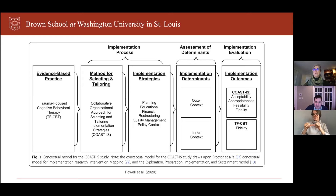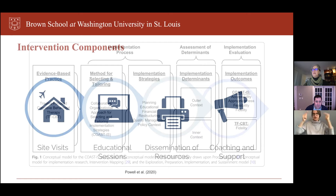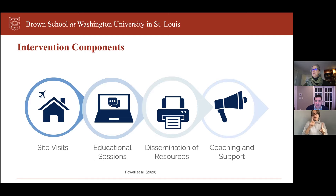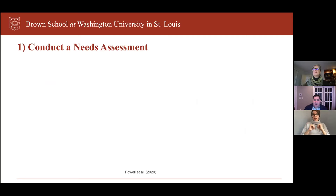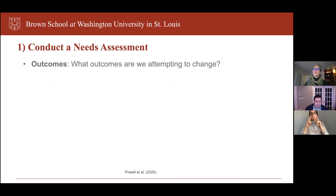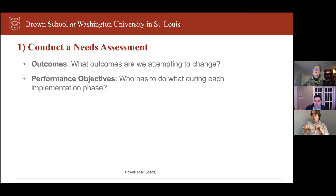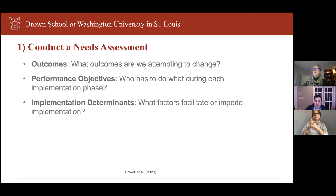EPIS is a hybrid determinant and process model that focuses on multiple phases of implementation. In terms of COASTIS intervention components, it involves site visits, five educational sessions, dissemination of educational resources, and then monthly coaching and support for organizations — essentially implementation facilitation or coaching. We operationalized implementation mapping by first conducting a needs assessment, thinking about what outcomes we're attempting to change, performance objectives — who has to do what during each phase to implement TF-CBT — and what factors facilitate or impede implementation.